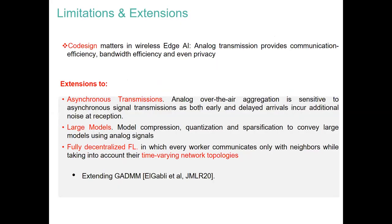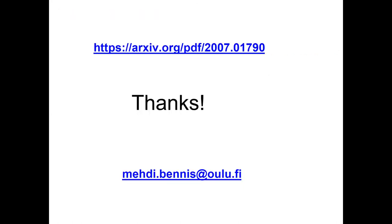The core hypothesis is that co-design of wireless communication and model training is necessary. We showed that using the analog transmission strategy helps in terms of communication efficiency, bandwidth efficiency, and scaling. It can also be shown to provide privacy. In terms of extensions, we need to relax assumptions such as synchronous transmission, and can look at model quantization, compression, sparsification techniques, and extending these to fully distributed topologies. Here is the paper and my email address — thank you very much, I'm happy to answer any questions.